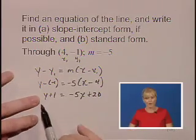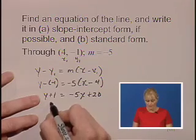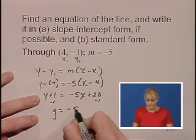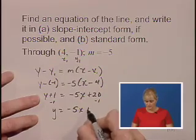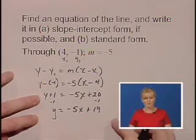Now the slope-intercept form means we have to have y isolated on one side of the equation, so we just subtract 1 from both sides. We'll have y equals -5x plus 19. So we've got part A, we've got the slope-intercept form.